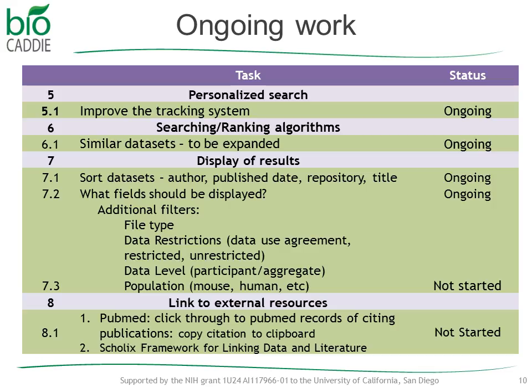File type might be applicable at the level of the repository rather than at the level of the data — saying these repositories provide these file formats, if that's what they mean by file type. Same with data restrictions. I'm not sure we'll be able to provide all the information the users are asking for based on the metadata we're actually getting from the repositories currently.